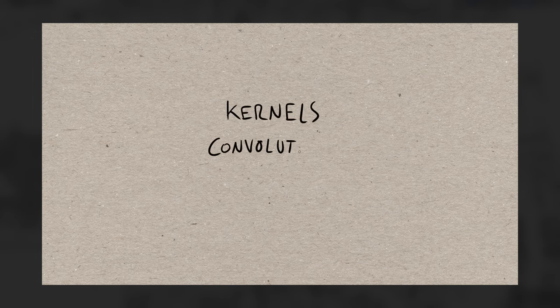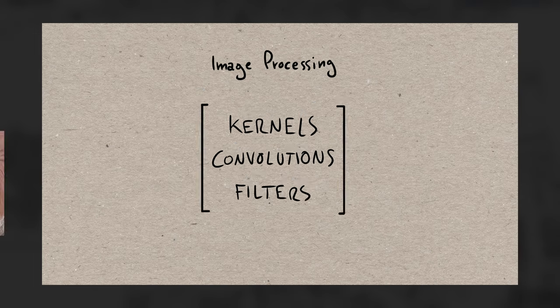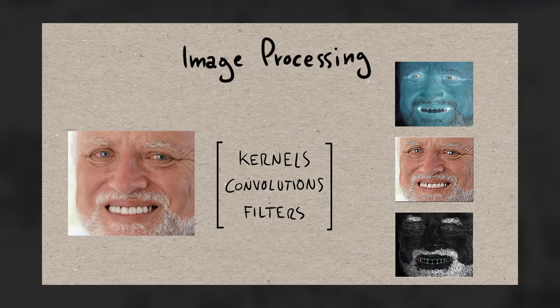Did you ever hear about kernels? Convolutions? Filters? In the context of image processing, they all refer to the same thing — a way to manipulate the values in a digital image to change, modify, or extract data from its pixels. What they do, per pixel, is look at the neighbors too, multiply them by certain numbers, and add all the results together.